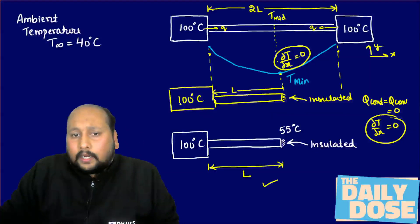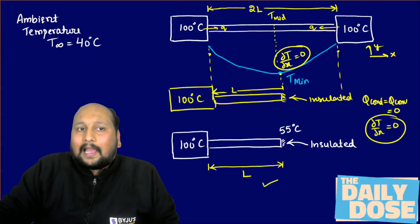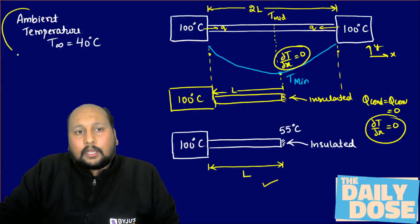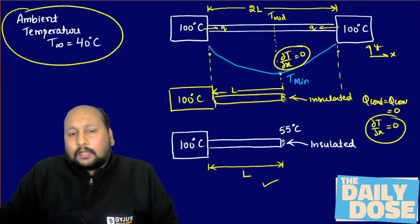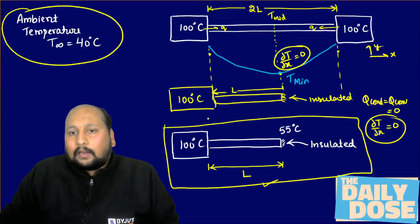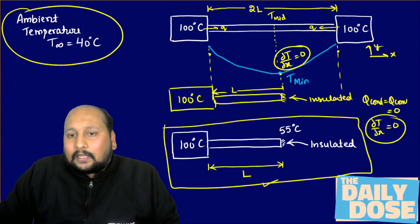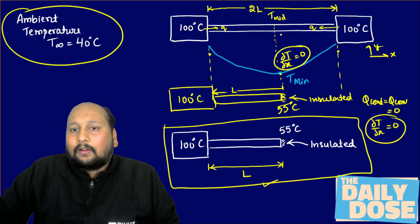So: 100°C base, length L, insulated tip, ambient at 40°C — this is exactly the same configuration as the shorter rod. Therefore, the temperature at the insulated tip of the shorter rod (55°C) equals the temperature at the midpoint of the longer rod.